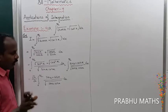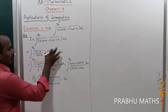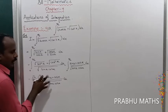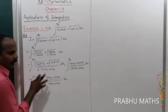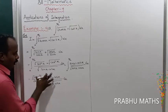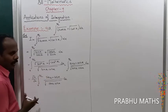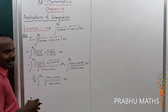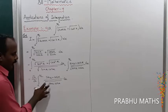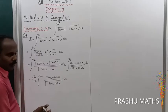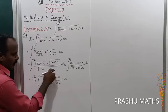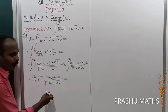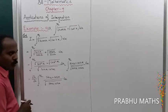So this becomes √2 · ∫₀^(π/2) (sin x + cos x) / √(sin x cos x) dx. We will now handle the sin x + cos x term in the numerator using a substitution method.